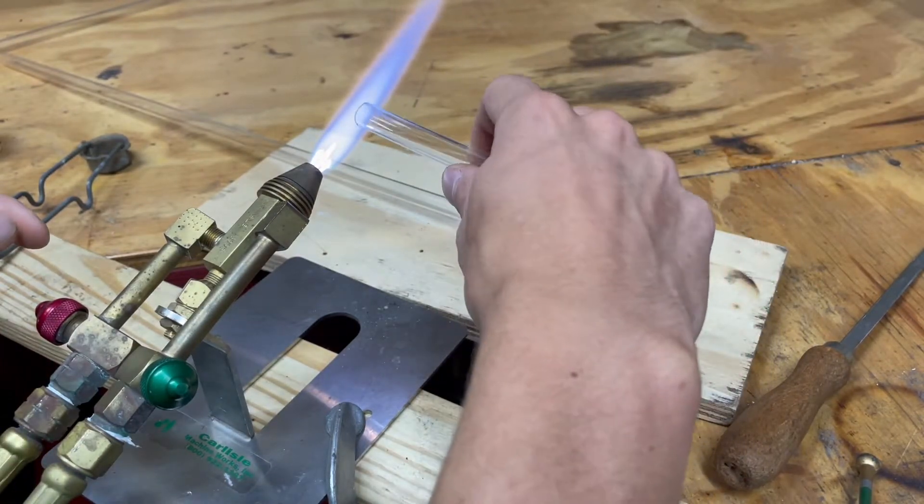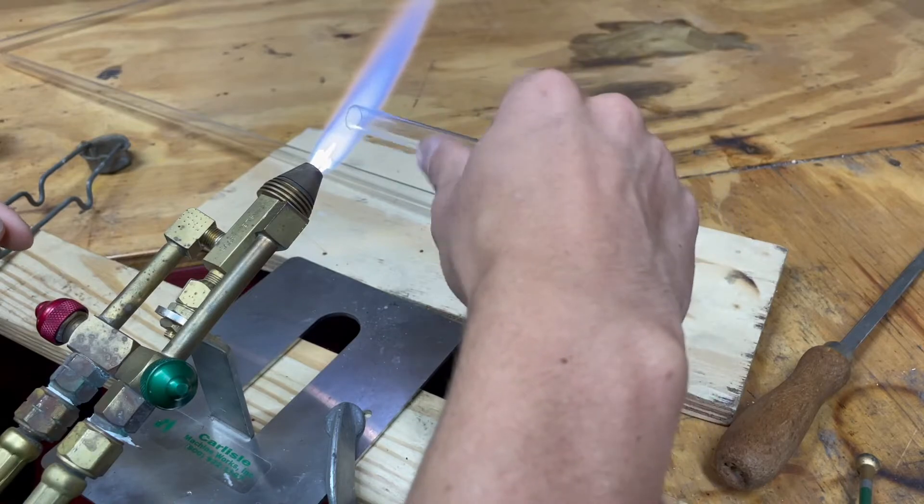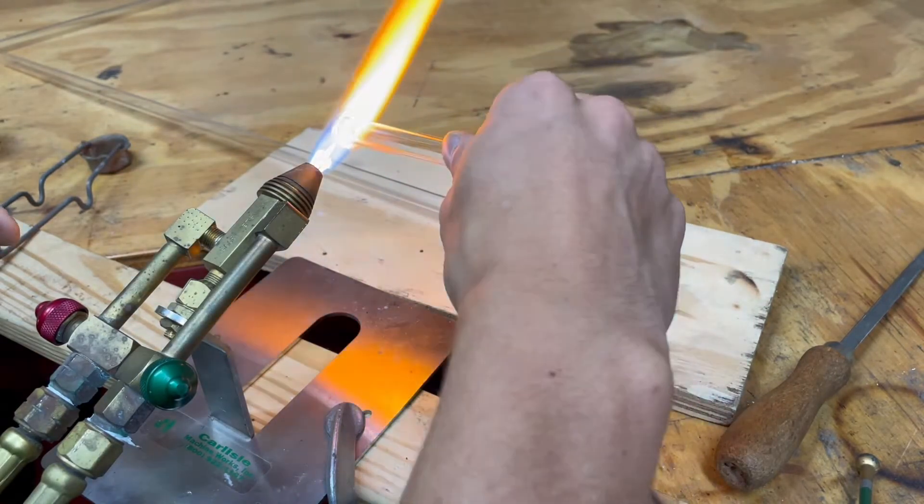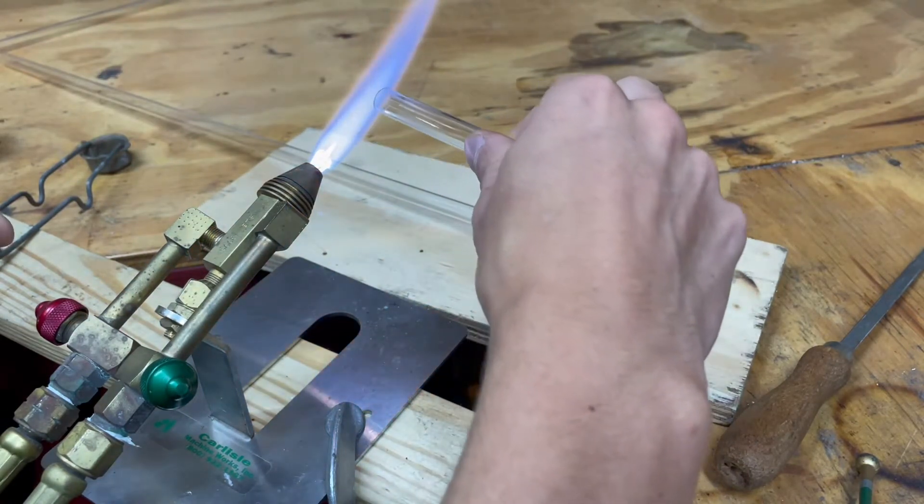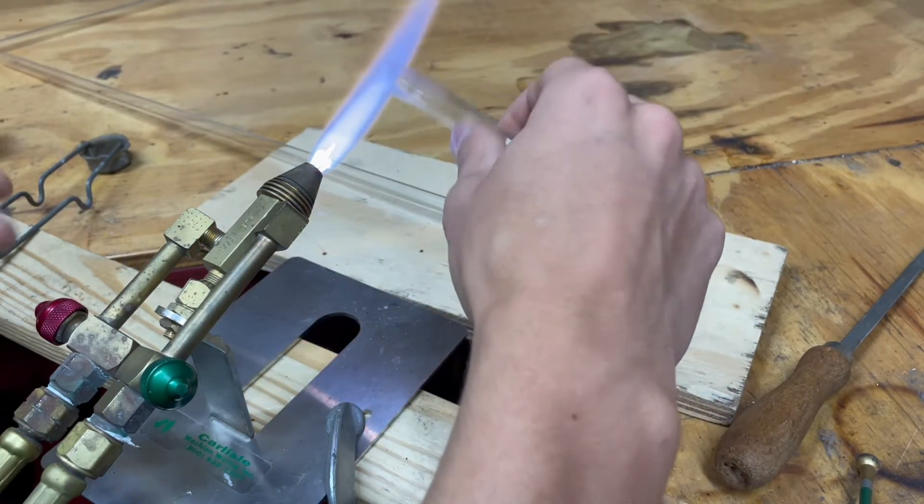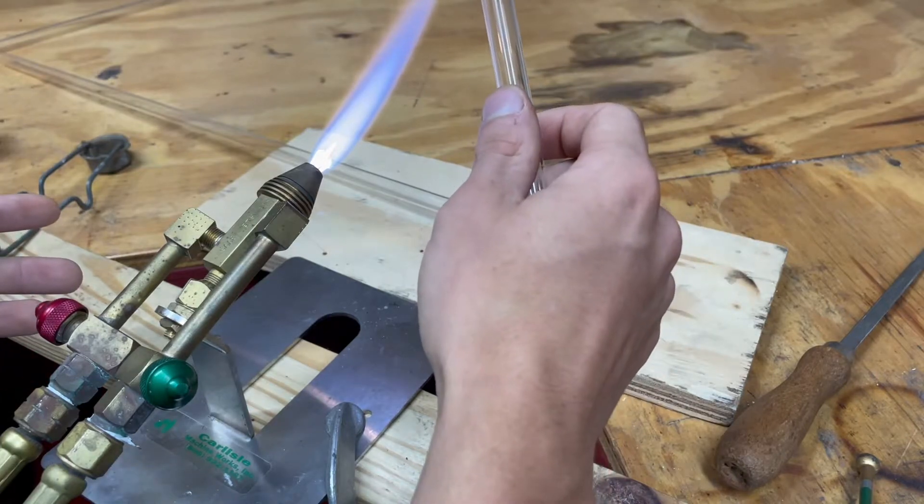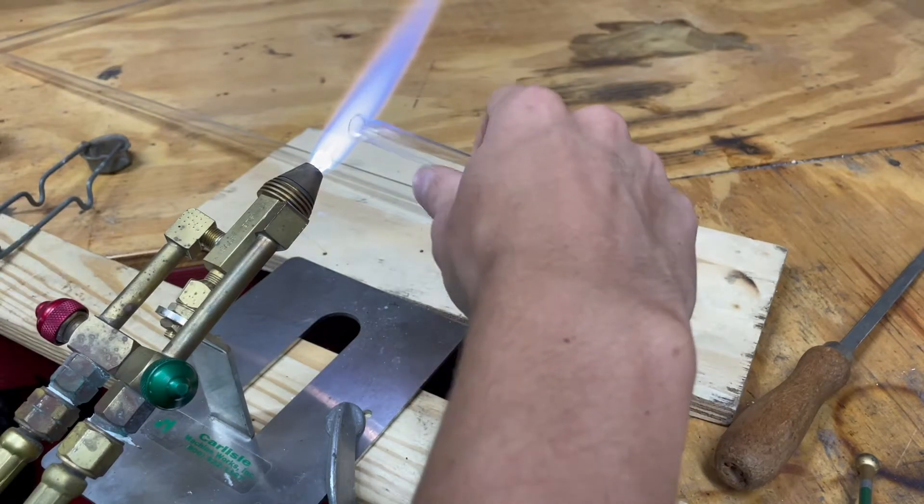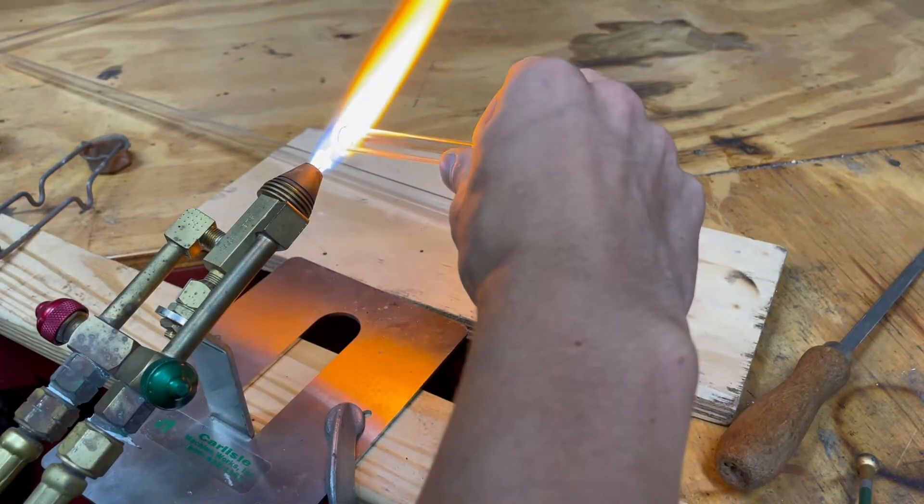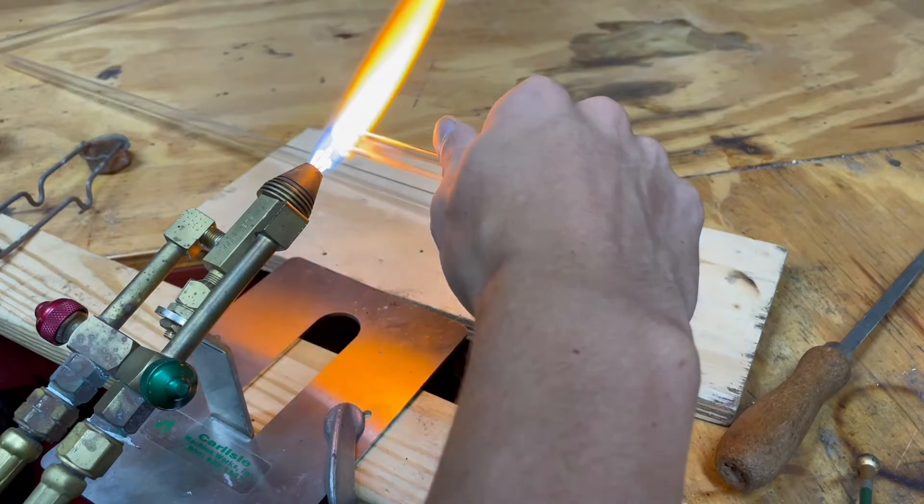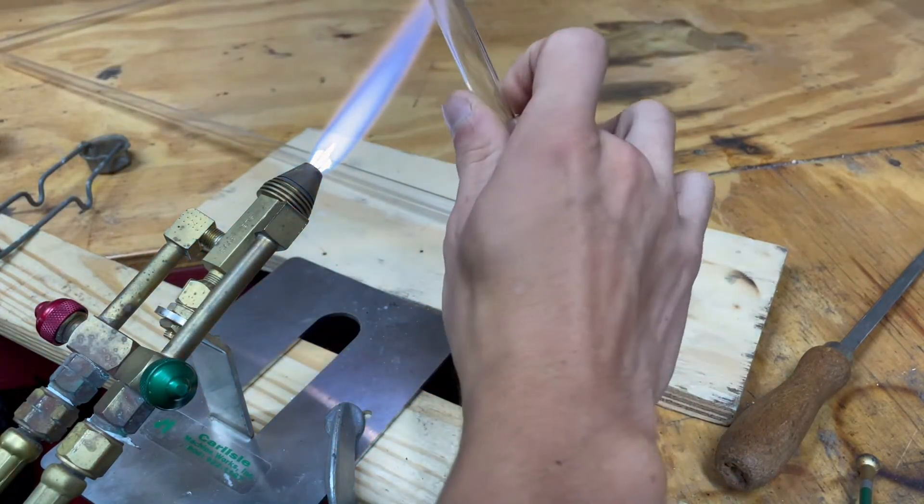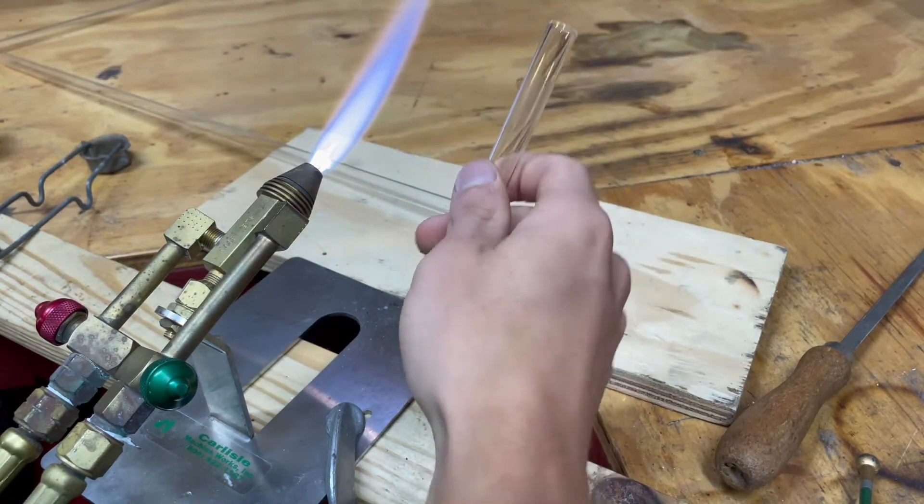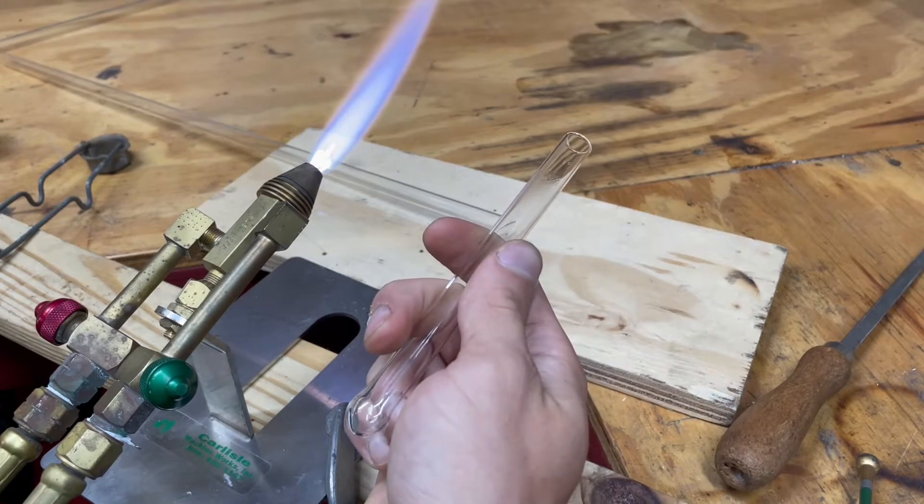Now we're going to bring it in and start heating it slowly at first until we get to the point where we start seeing the sodium flares and it starts melting. Once again it's not as common with rod as tubing for it to break as soon as you go into it but it can occur. Now it really doesn't take much to flame polish and we're already done.